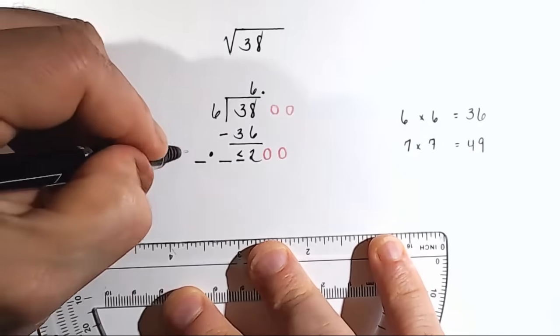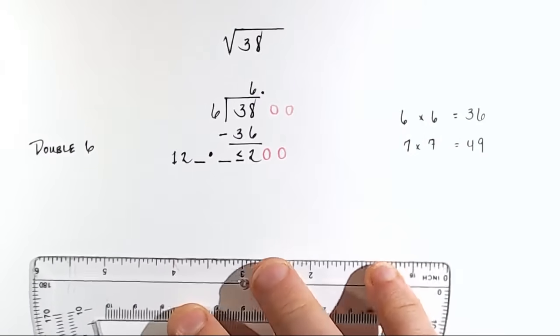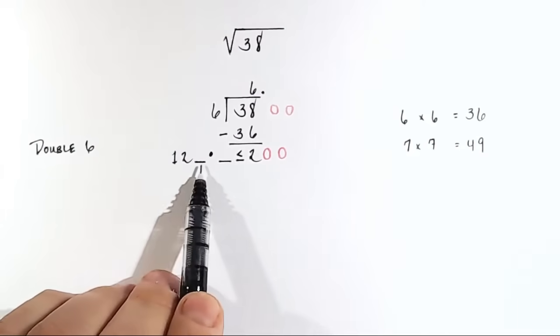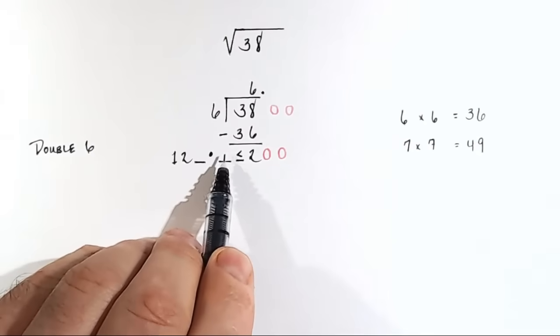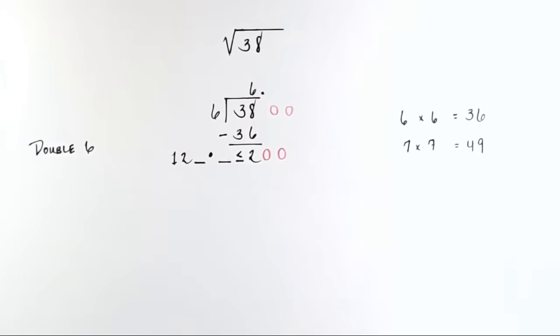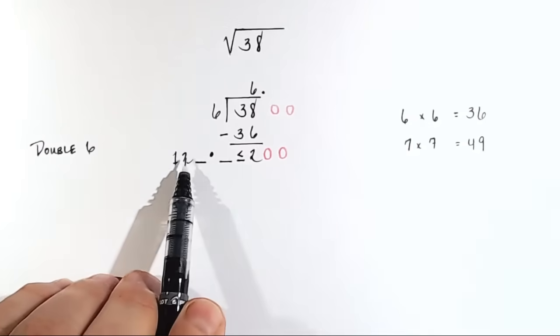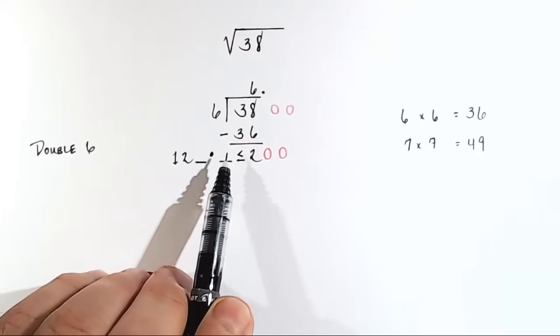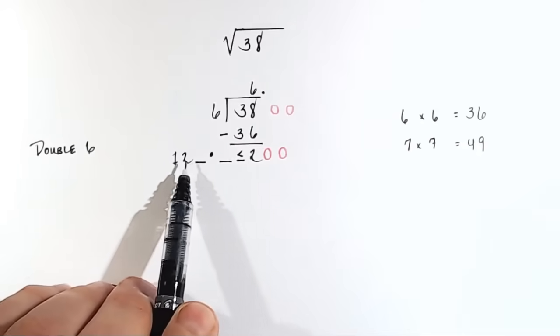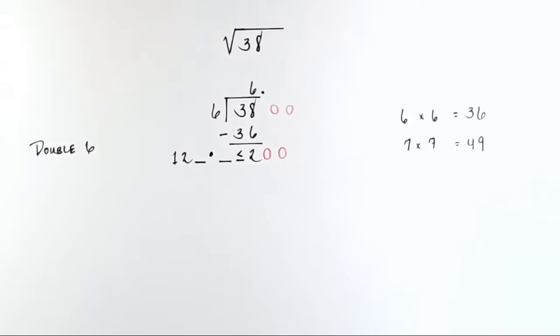6 times 2 is 12. So this is 1, 2. What we're looking for here is now a three-digit number whose last digit goes here. It's better to just see it happen. So what we're looking for is a three-digit number whose last digit can be placed here. And when you multiply that three-digit number by that last digit, you get a number that is less than or equal to 200.